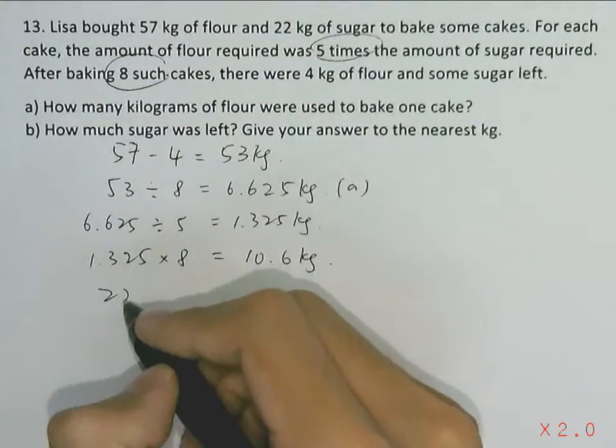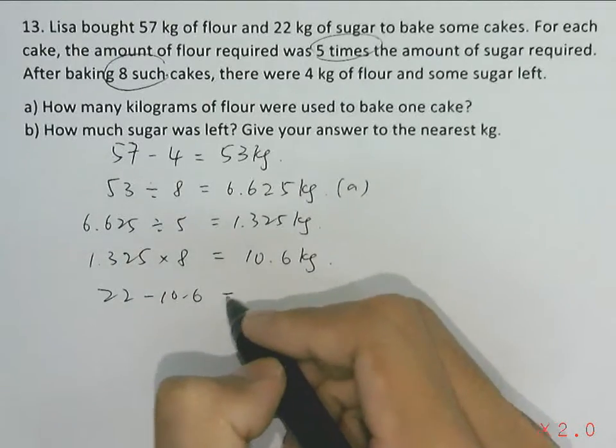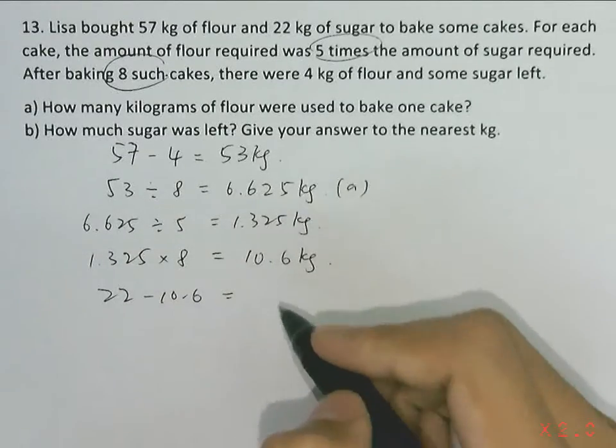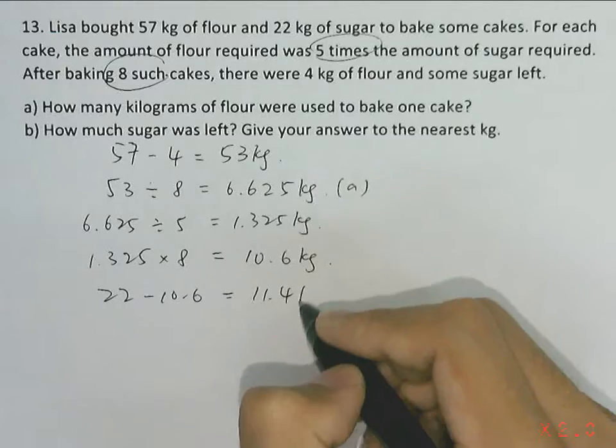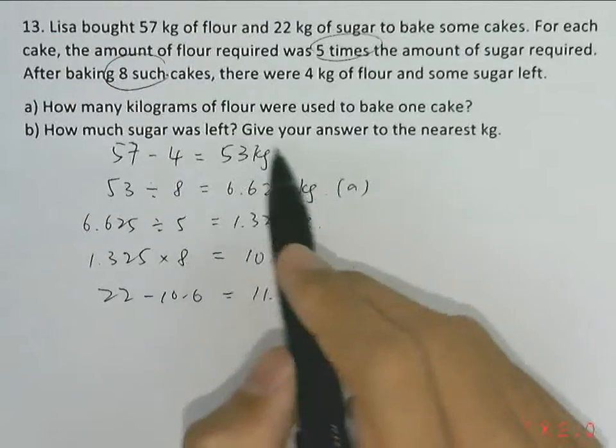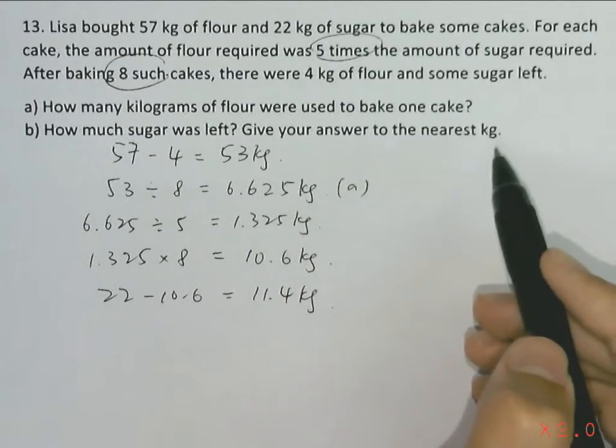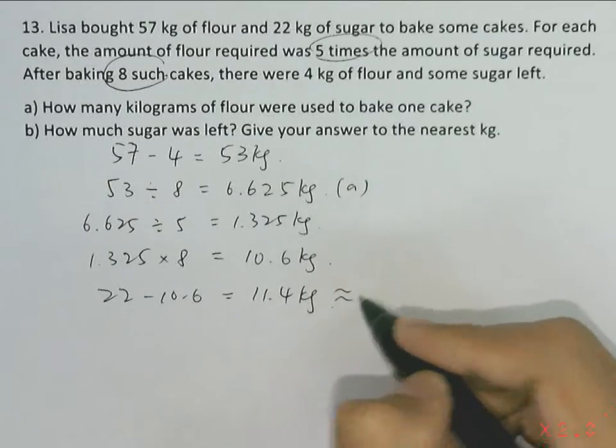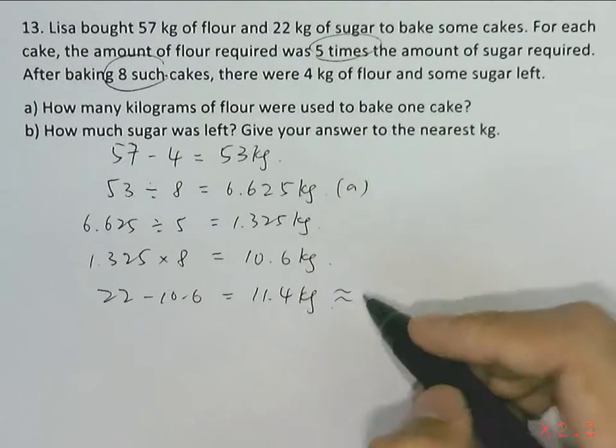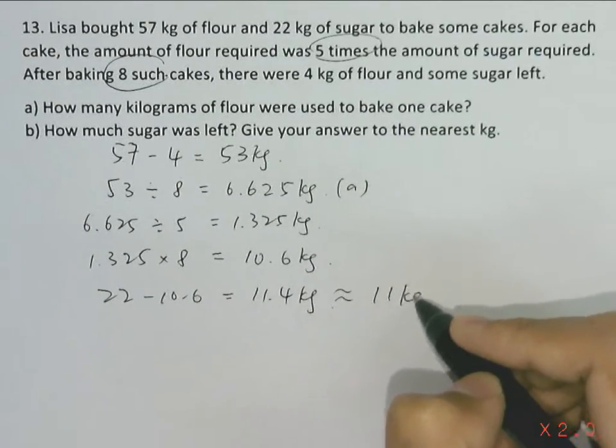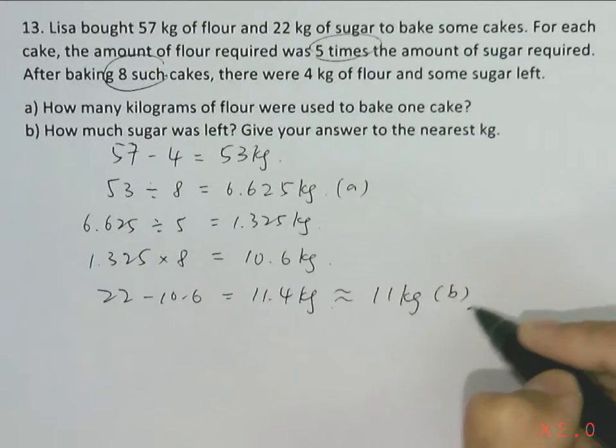Since she had 22 kilograms at first, when she used up 10.6 kilograms, the amount of sugar left will be 11.4 kilograms. But the question demands our answer to the nearest kilogram, so we'll round it down to 11 kilograms as our answer for part (b).